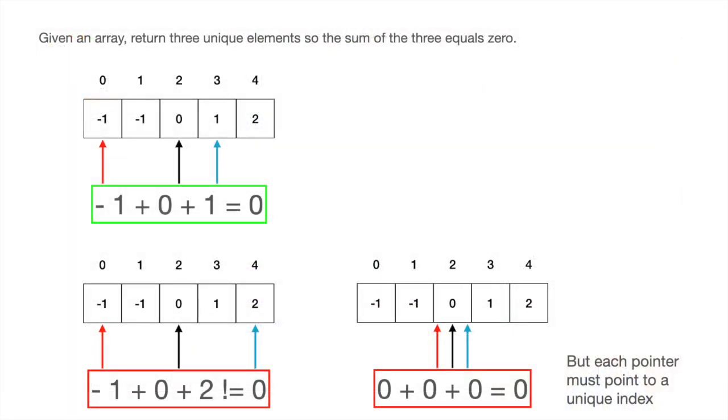We wish to find three indices where the sum of the three indices is zero as long as each index within that triplet is unique. So for the first example, the pointers indicate indices zero, two, and three. And this sums to zero since the elements are minus one, zero, and one, which altogether sums to zero.